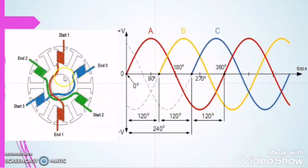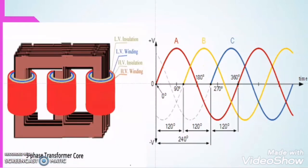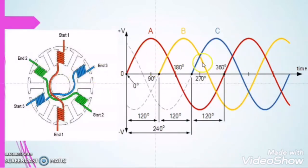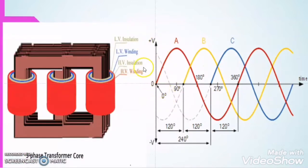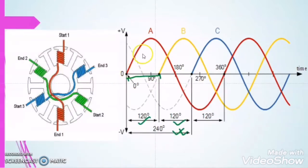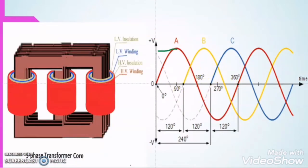In the case of the three phase induction motor, the power supply is a three phase supply, and the characteristic is the same as the three phase power supply given to the transformer. The R phase, Y phase, and blue phase are displaced from each other by 120 degrees. The same characteristic applies to the transformer's supply. So these are the similarities between the three phase induction motor and the three phase transformer.